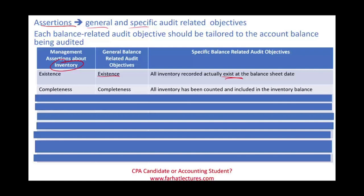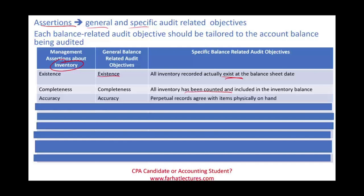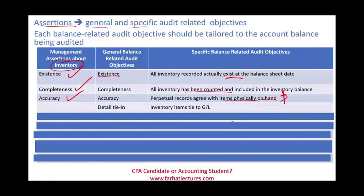Completeness for inventory: did we account for all the inventory? Was all inventory accounted for? Accuracy: is the perpetual record in agreement with the items physically on hand? We counted them — they exist and we accounted for everything. Is the number correct? Detailed tie-in: we counted all the inventory and added it up — does it match the inventory balance in the general ledger? Does it tie to the general ledger? If it doesn't tie, we have a problem.